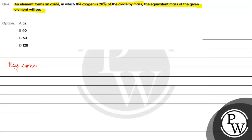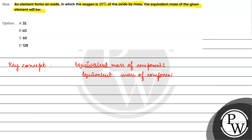The key concept for this question is: equivalent mass of component one divided by equivalent mass of component two will be equal to mass of component one divided by mass of component two.